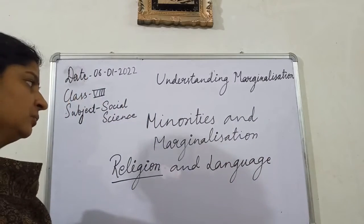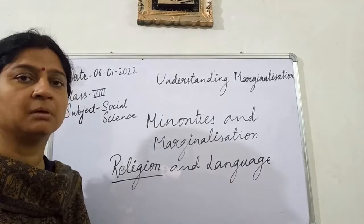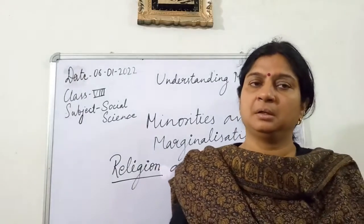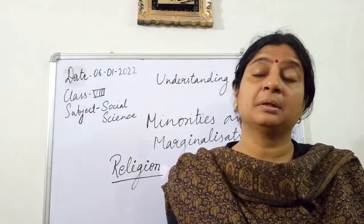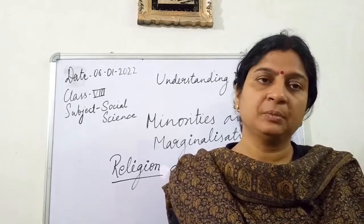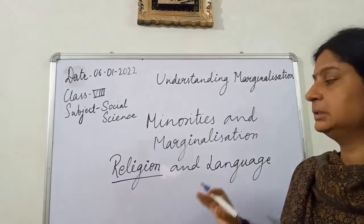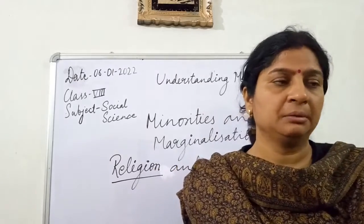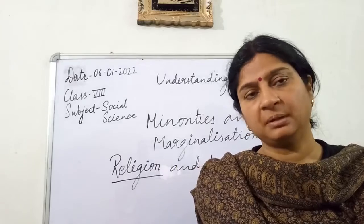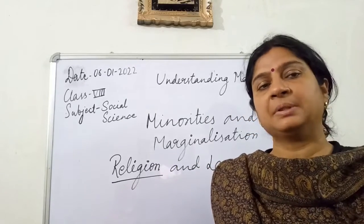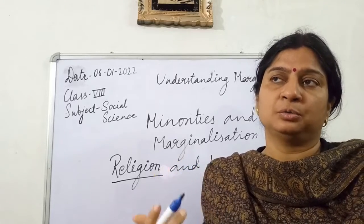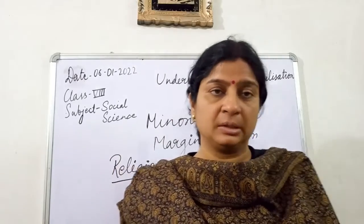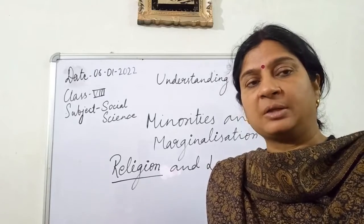What do we mean by religious minority? There is minority on the basis of religion — when people belonging to a particular religion are lesser in number in comparison with the number of people who belong to another religion. If the number of people who follow a particular religion is lesser, then it is called a religious minority group.